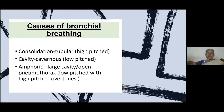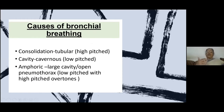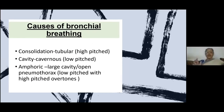If you look at the traditional causes of bronchial breathing, generally we say: consolidation — which is tubular, high-pitched; cavernous — which is due to a cavity, low-pitched; and amphoric — which is in a large cavity or open pneumothorax with bronchopleural fistula, described as low-pitched with high-pitched overtones. Consolidation is tubular and high-pitched, cavity is cavernous and low-pitched — very easy to remember because cavity is cavernous: C goes with C.